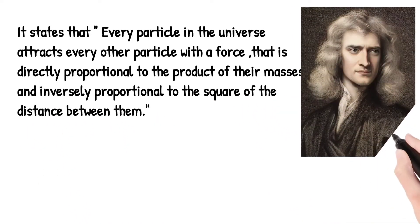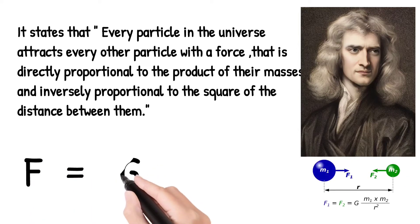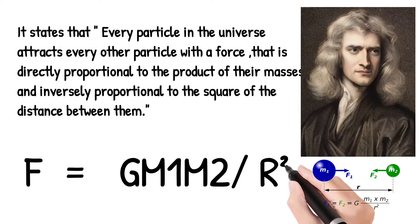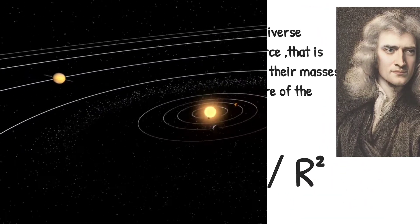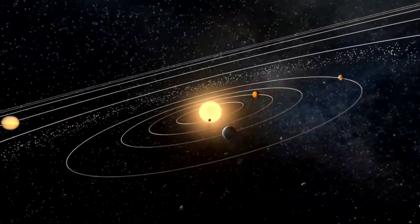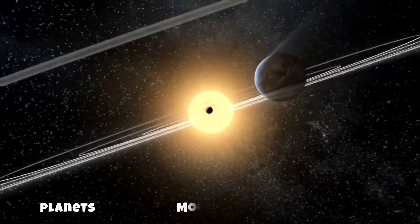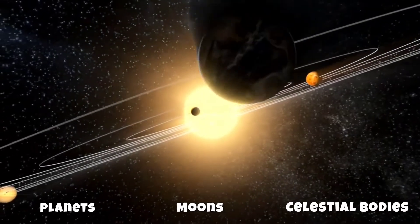In simpler terms, this means that every object in the universe is attracted to every other object, and the strength of that attraction depends on their masses and the distance between them. Newton's Law of Gravitation laid the foundation for understanding the motion of planets, moons, and other celestial bodies.